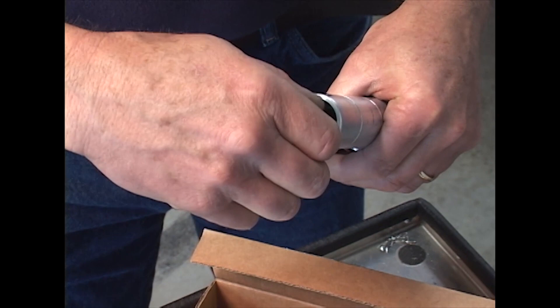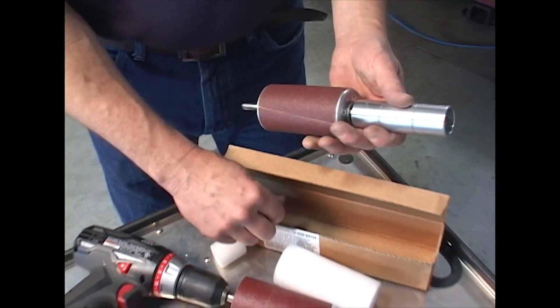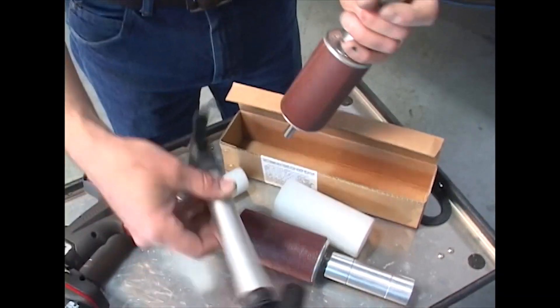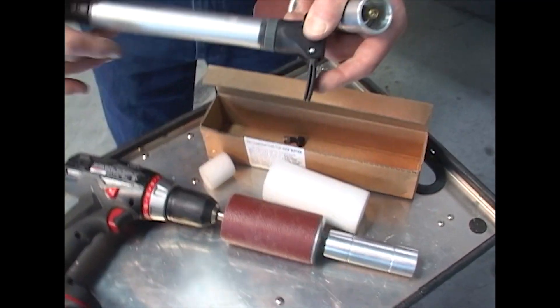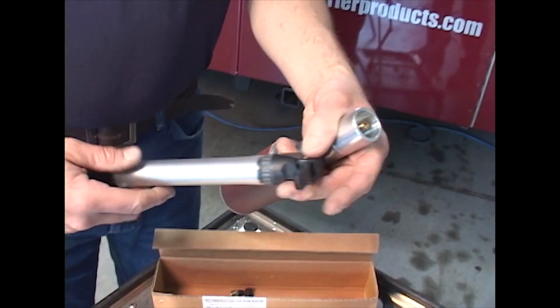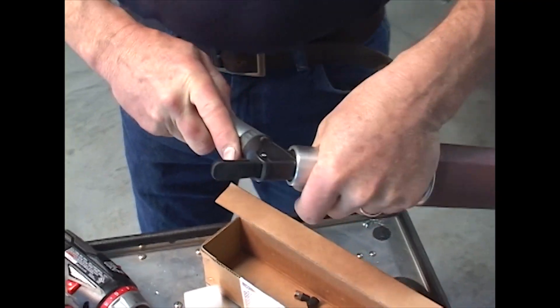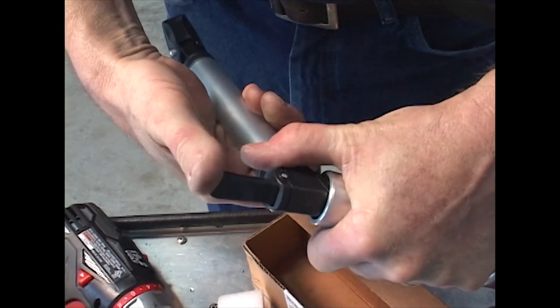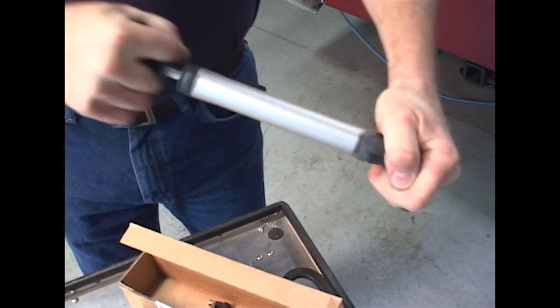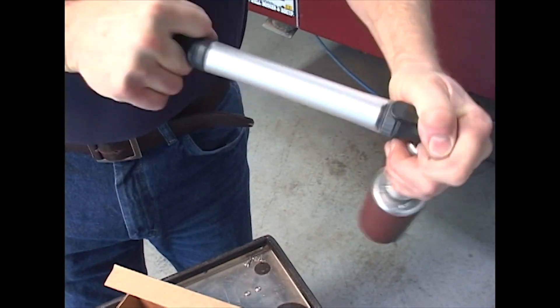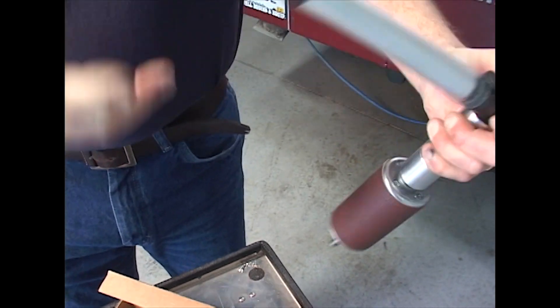We're going to inflate this unit using a bicycle pump, just a Walmart unit, nothing specific. It just has to have enough clearance here so that it fits firmly over the stem, and you pump it so that you have enough pressure in there to your liking.